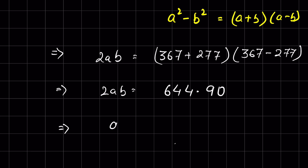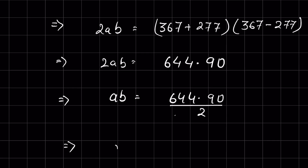So ab equals 644 times 90 divided by 2. Simplifying, 90 divided by 2 is 45, and 644 times 45 equals 28980.